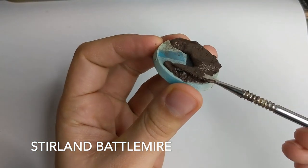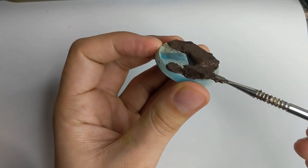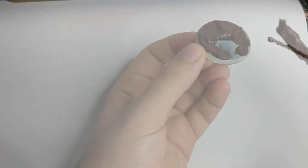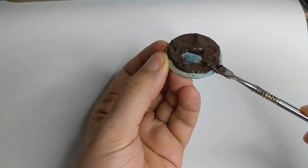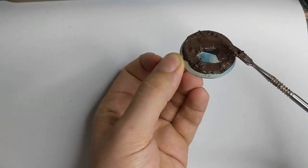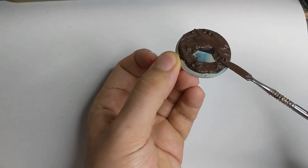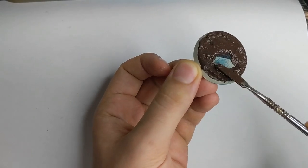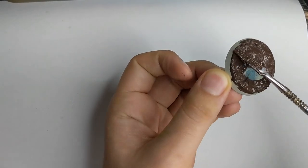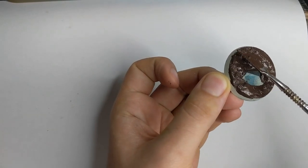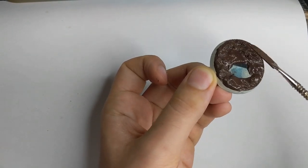To create a second base for today I will use Stirland Battlemire. I will put it on top of the base but creating a little pool in the middle where I actually want to put my water effect, like a little pool with some dead plants or just dead murky water. Just spread it all around and leave it outside to dry for a good half an hour or maybe even one hour.